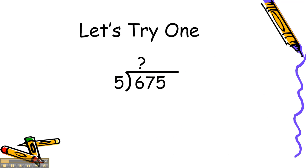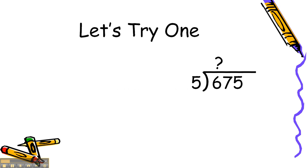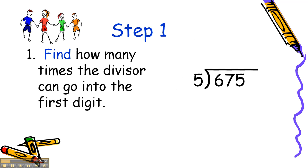Now, let's try a problem: 675 divided by 5. Let's go to the first step. We think of father. Find how many times the divisor can go into the first digit. I draw a line on my problem, or I do it mentally so I can keep my numbers lined up. Then I look to see how many times 5 will go into 6.